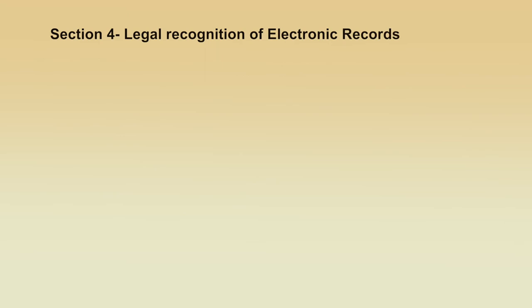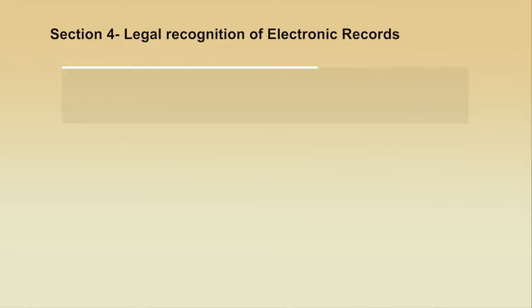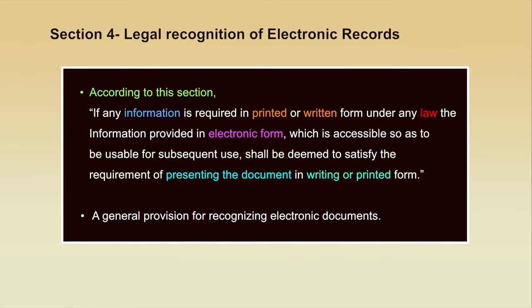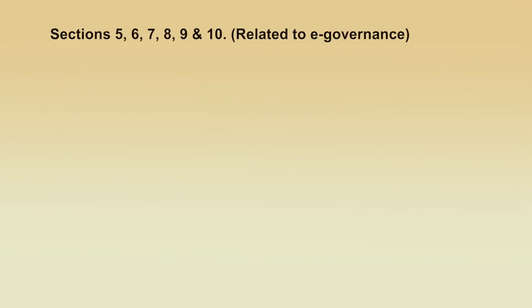Section 4 provides the legal recognition of electronic records — it provides legitimacy to electronic records. According to this section, if any information is required in printed or written form under any law, the information provided in electronic form which is accessible and usable for subsequent use shall be deemed to satisfy the requirement of presenting the document in writing or printed form. Other sections related to e-governance are sections 5, 6, 7, 9, and 10.